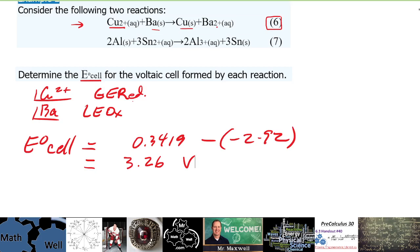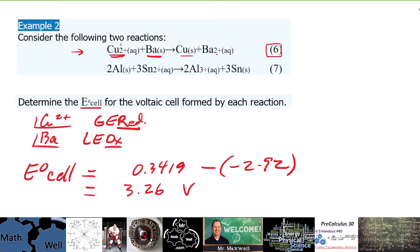So that's the electric cell potential. So again, find out which one is being reduced and oxidized, whichever one is further down the list you take the reduction potential of this one and you minus the reduction potential of this one.